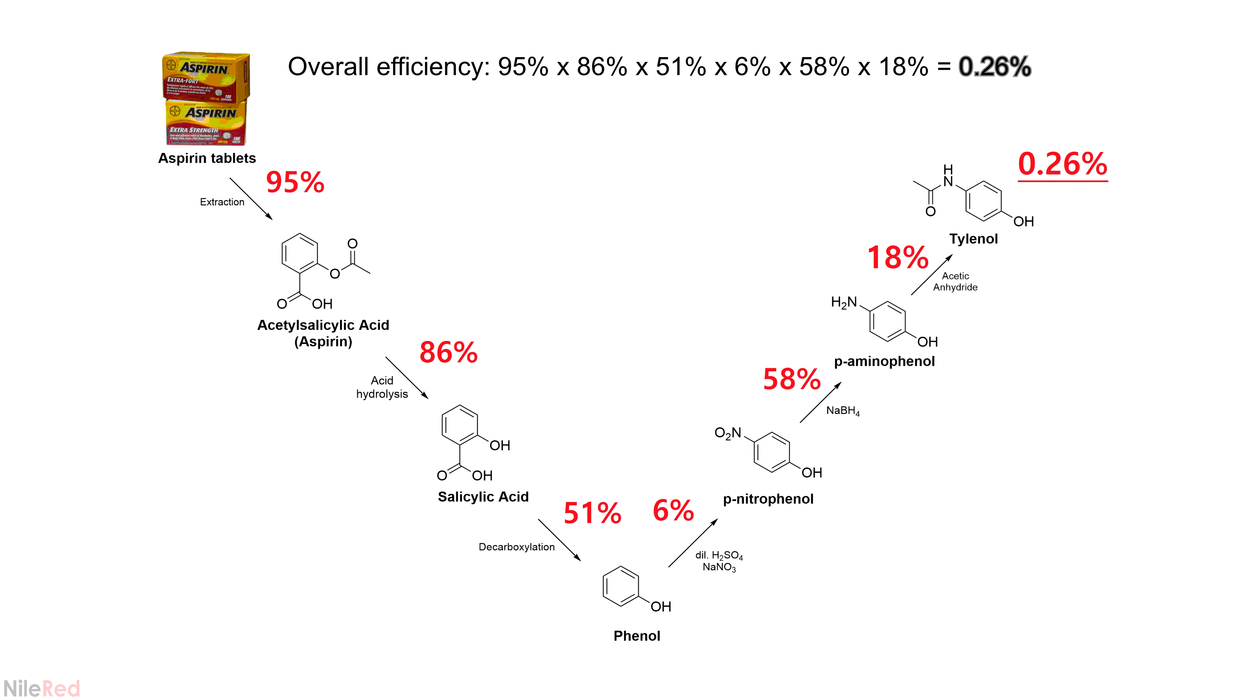To get the efficiency of the series, I multiply out the individual efficiency of each reaction to get an overall percentage of 0.26%. So with this amazing method, I was able to convert about a hundred extra strength aspirin tablets to one regular strength paracetamol. In the end though, this was mostly just for fun and to explore the chemistry. I never really expected to get a great yield.